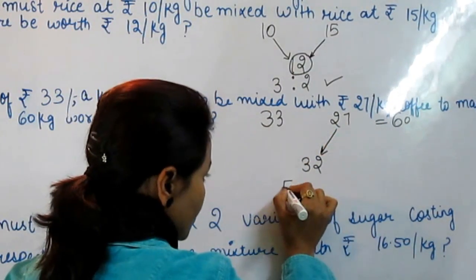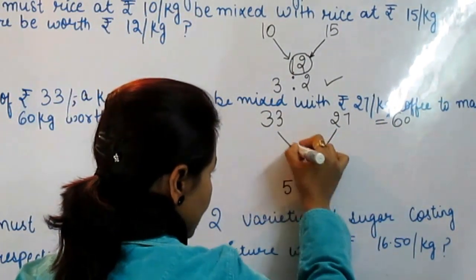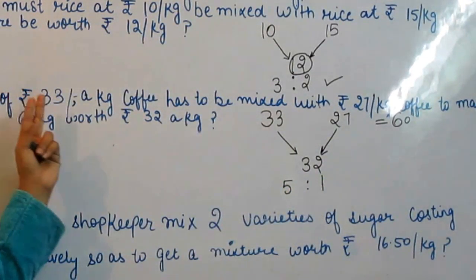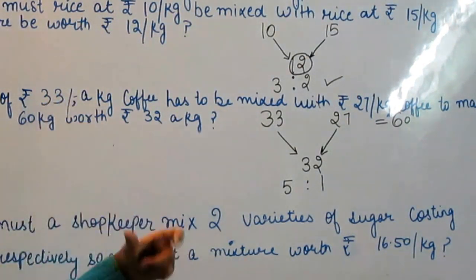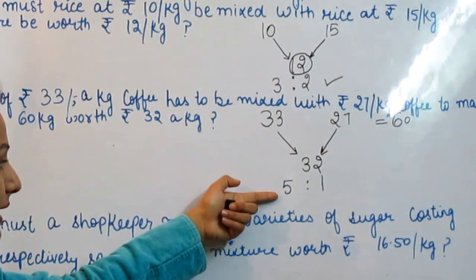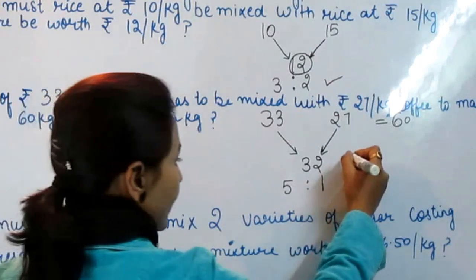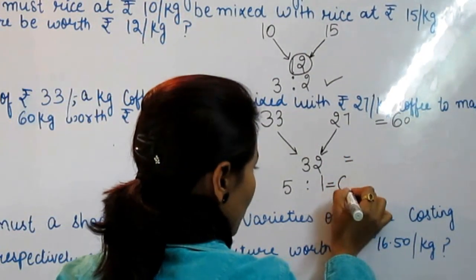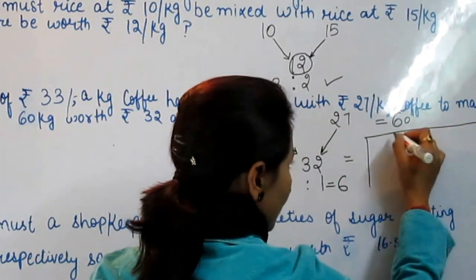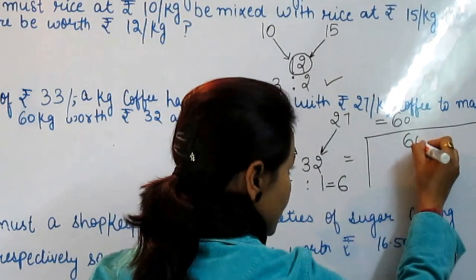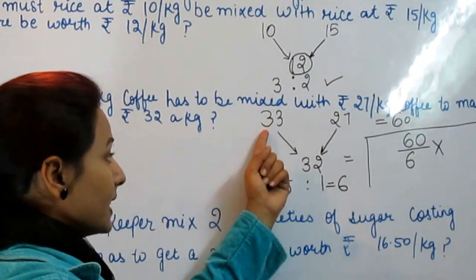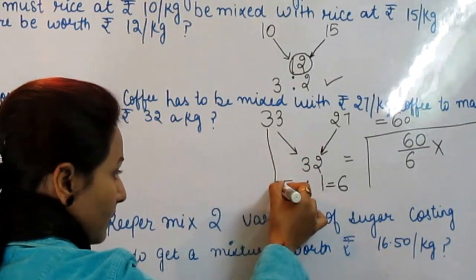Applying alligation, we get a ratio of 5:1. Total ratio is 5+1 = 6. Total mixture is 60 kg. The question asks how many kg of Rs. 33 per kg coffee was taken — that is in ratio 5.